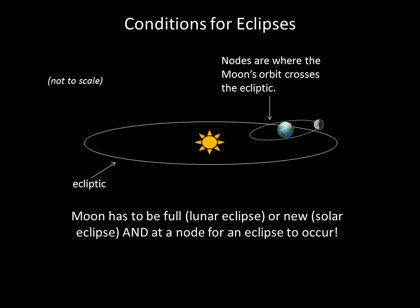The Moon's orbit is tilted by about 5 degrees relative to the ecliptic plane. The points where the Moon's orbit crosses Earth's orbit are called nodes. In order for there to be an eclipse, the new or full Moon must occur during one of the periods when the nodes of the Moon's orbit are aligned with the Sun and Earth. If the Sun, Earth, and Moon are nearly perfectly aligned, we'll see a total eclipse, either solar or lunar. If it's less than perfect, then we'll see a partial eclipse.